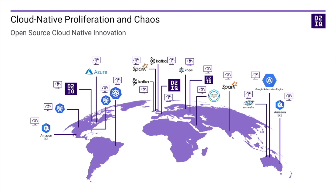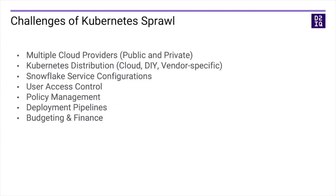What challenges does this pose? There's lots. If you're deployed across multiple cloud providers such as Amazon, Azure, and Google, how do you ensure consistent configurations across all of them? They're all managed by different platforms, and they all have different tools and utilities to manage them.